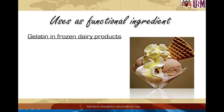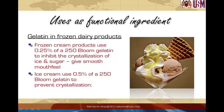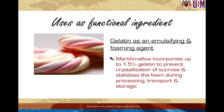In frozen dairy products such as ice creams, gelatin gives a smooth mouthfeel. It also functions to inhibit crystallization of ice and sugar, which can cause a sandy mouthfeel. Only a small amount of gelatin is needed, typically ranging from 0.25 to 0.5 percent. Marshmallow is a type of solid foam — its soft texture and spongy structure are due to air bubbles trapped in the structure. In this case, gelatin is used as a foaming agent to stabilize the foam so it won't collapse, and it also prevents crystallization of sucrose, which is undesirable.